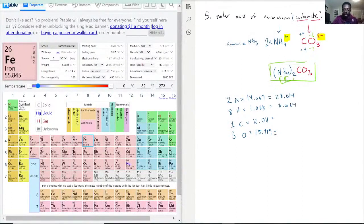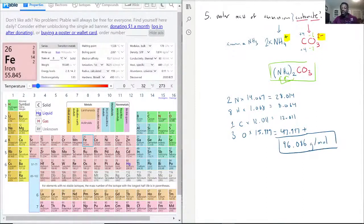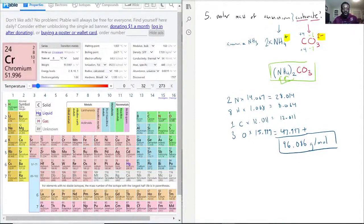So two times 14.007, that's 28.014. Eight times 1.008, that's 8.064. Carbon will stay the same. And three times 15.999, we have 47.997. So these four are all going to be added together and we get 96.086 grams per mole. And this right here would be your molar mass of ammonium carbonate.